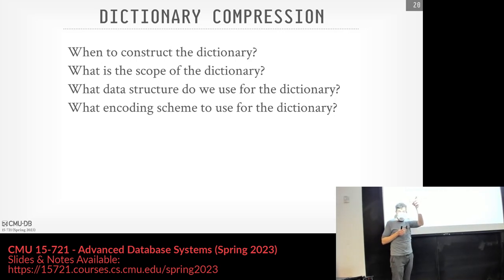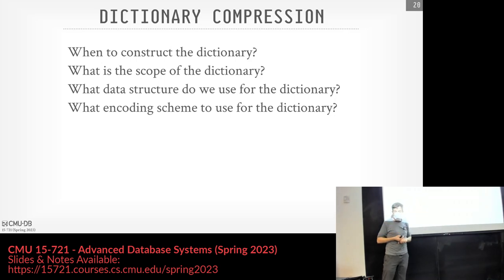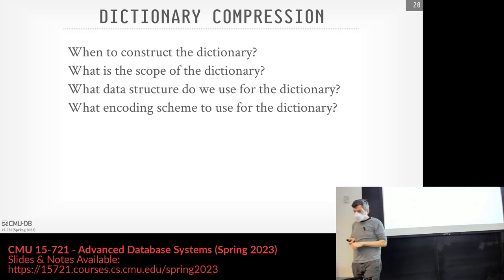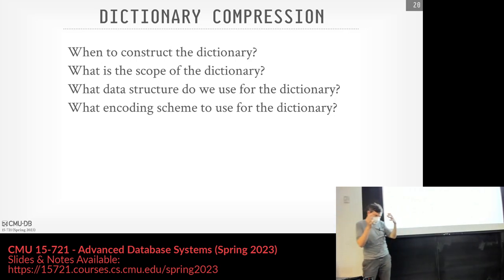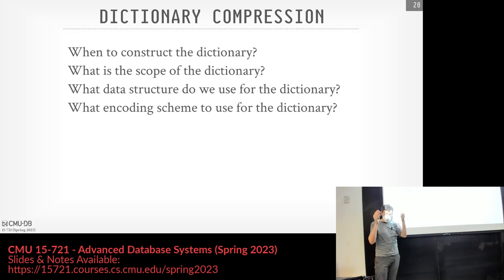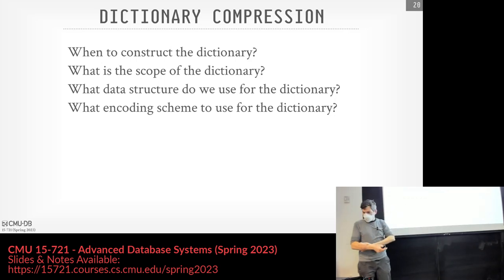Next is the scope of the dictionary — how much are we looking at? Block level would be within a single column, all values for those tuples in that block. The problem: if different blocks have their own dictionary, when doing comparisons or combining them into a single data structure, you always have to decompress them, because dictionary codes for one block are not the same as codes in another block — you don't want false positives. If I'm building a hash table for a join and have multiple blocks that are dictionary compressed, I can't store dictionary codes because the same code might repeat from one block to another.